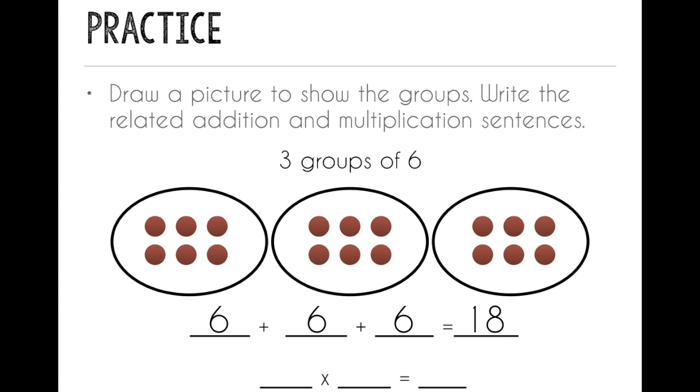To write it as a multiplication sentence, first I write the number of groups. So I have three groups, then I multiply by the number in each group. So there's six objects in each group, so I do three times six to get my product of 18. So remember, when we're writing our multiplication sentence, our first factor, or the first number we write, is the number of groups. And our second factor is the number in each group.